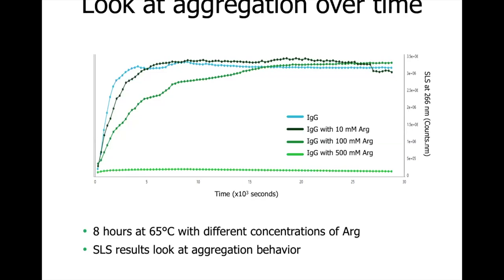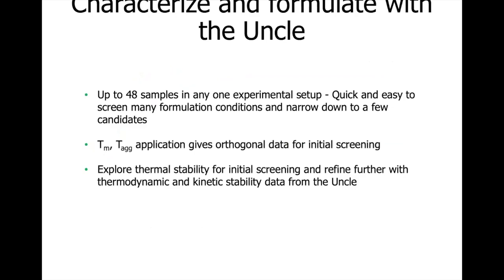From first screening to in-depth characterization, UNCLE can help with choosing the most promising formulation for your protein. UNCLE can measure up to 48 samples in any one experimental setup with one-click analysis, making the process quick and easy. UNCLE's different detection methods and variety of applications can provide a more complete picture of your protein stability, allowing for more informed decisions in characterization, formulation screening, and candidate selection. Use the TM and T-Ag application to screen out unstable formulation conditions and refine further with delta G, colloidal, and kinetic stability data.